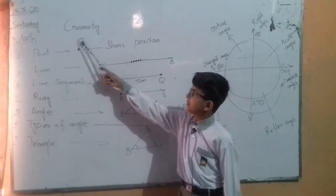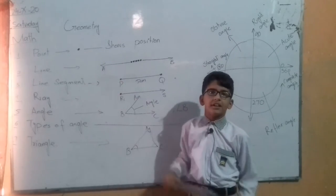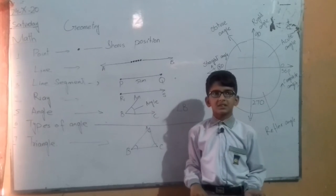Geometry. Geo means earth and metry means measurement. Geometry means earth measurement.